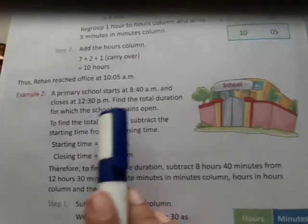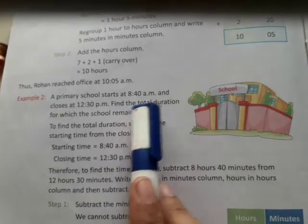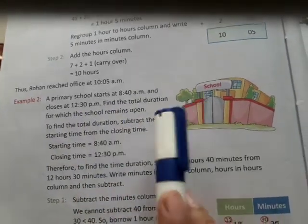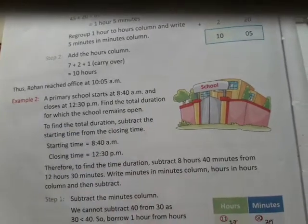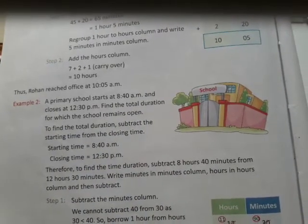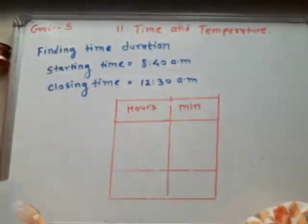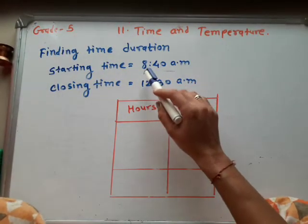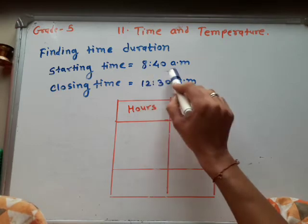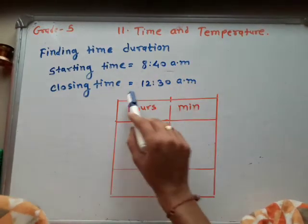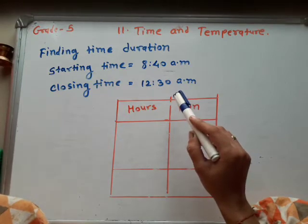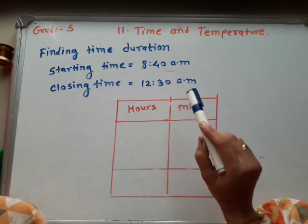A primary school starts at 8:40 am and closes at 12:30 pm. Find the time duration for which the school remains open. So here we find the time duration. The school starts at 8:40 am and closing time is 12:30 pm. To find the time duration we subtract the starting time from the closing time.